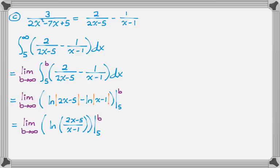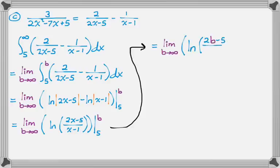So fundamental theorem here is going to give me, I'm just going to plug in B, so the limit as B approaches infinity, natural log with B substituted in gives us this, and then minus, and when you plug in 5 you just get numbers, so minus the natural log of 5 over 4.